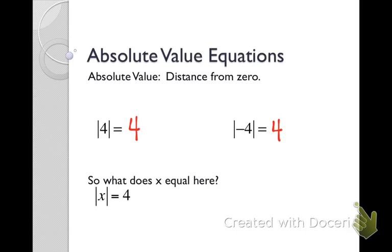So now, we want to know what x equals when we have the absolute value of x equaling four. What number could I put into the absolute value to make this a true statement? If I were to plug two in, is the absolute value of two four? No it's not, so it's not two. The only numbers that will work are four and negative four, because the absolute value of four is four and the absolute value of negative four is four.